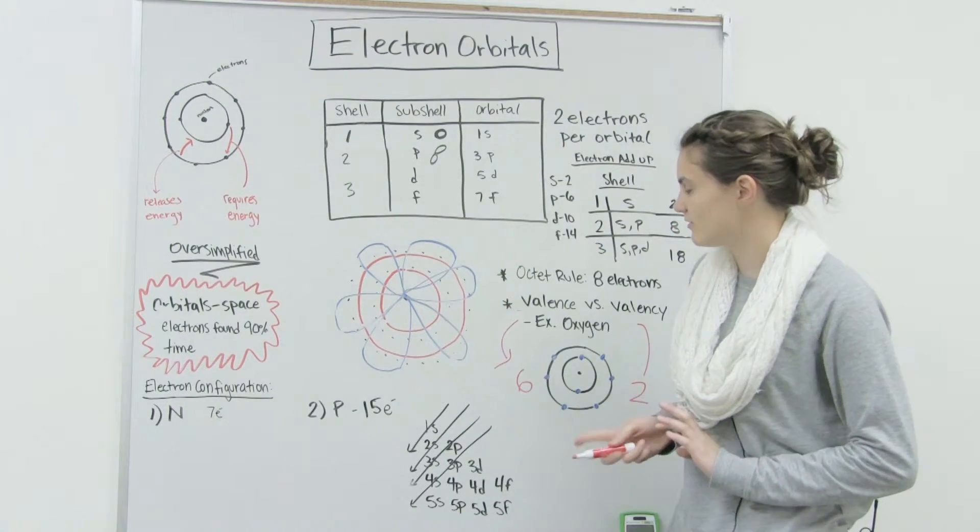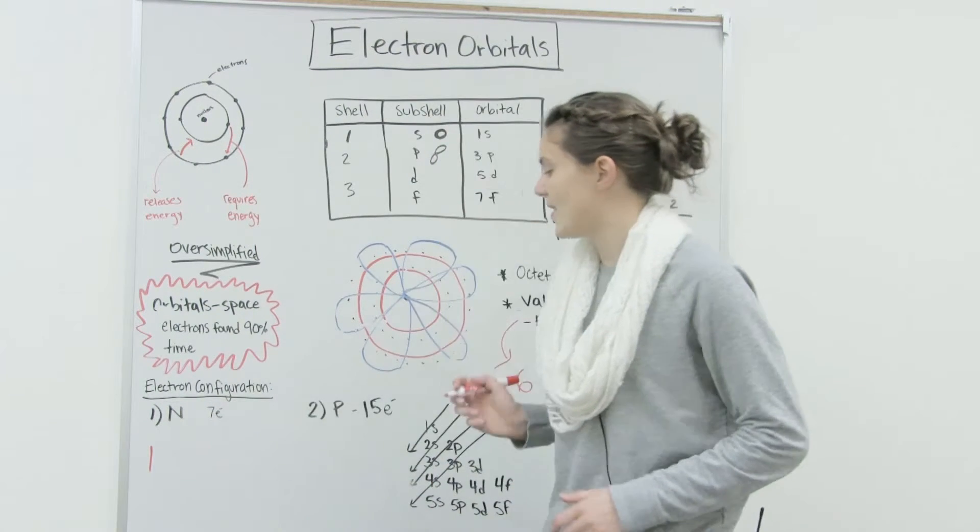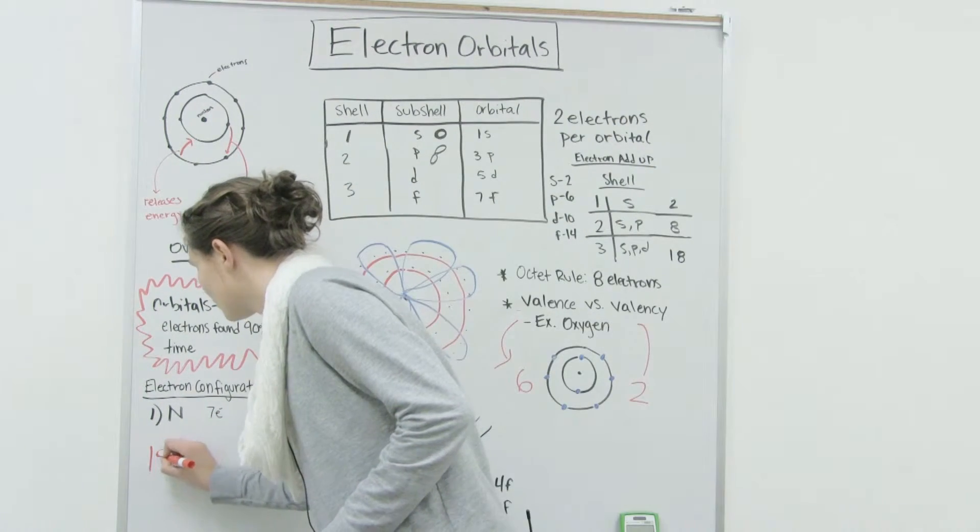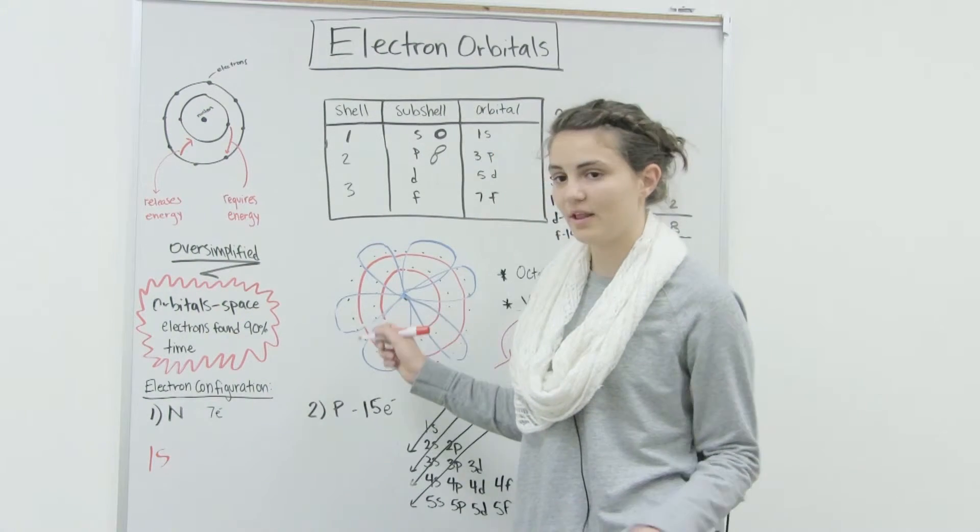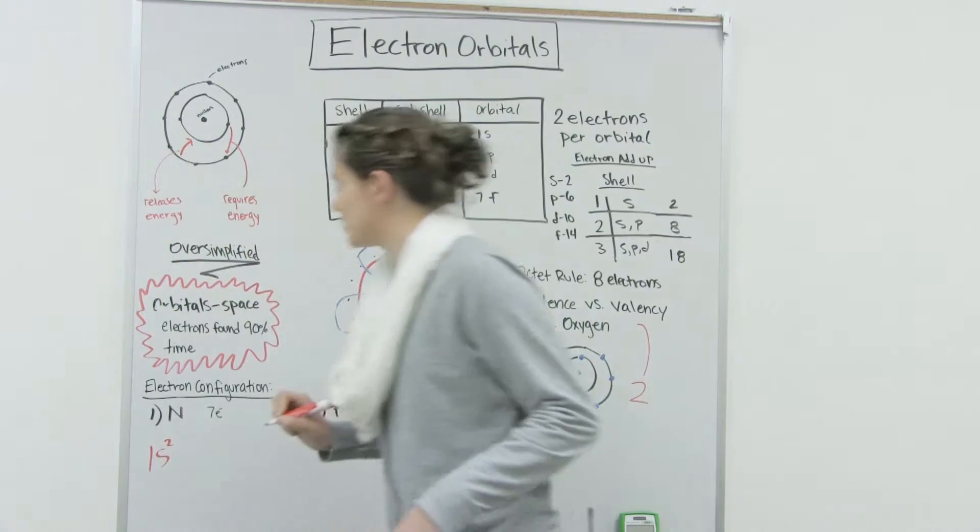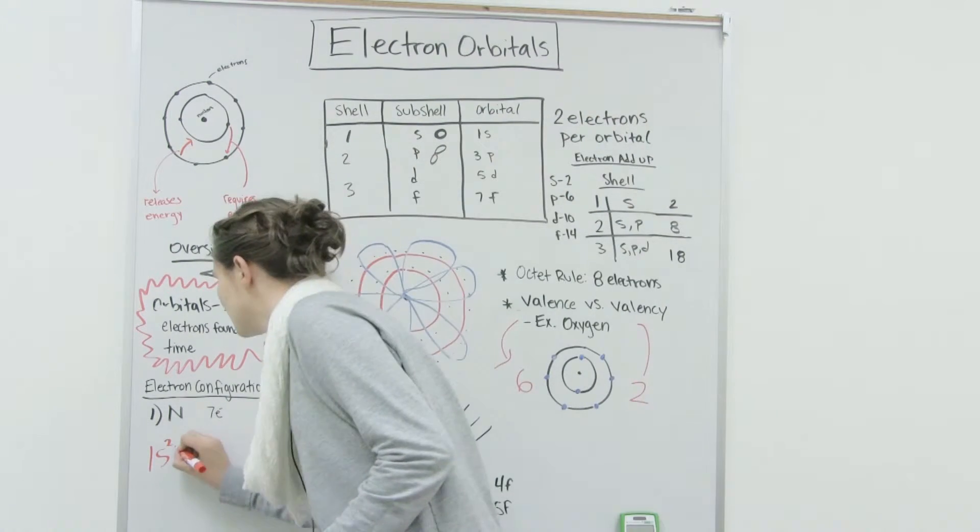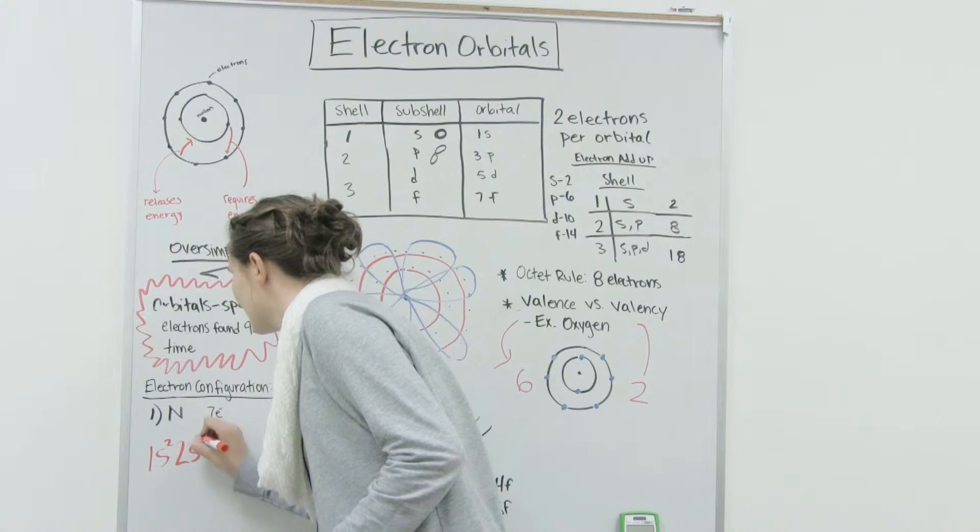So to write an electron configuration, you start off with the shell, the first shell it's going to fill in, and then the orbital or subshell, and then how many electrons fill it in. So for s, the max is two. Then we're going to go to the next one. So the next one's the second shell. So we're going to write two. It's going to be s again, and the max is two.